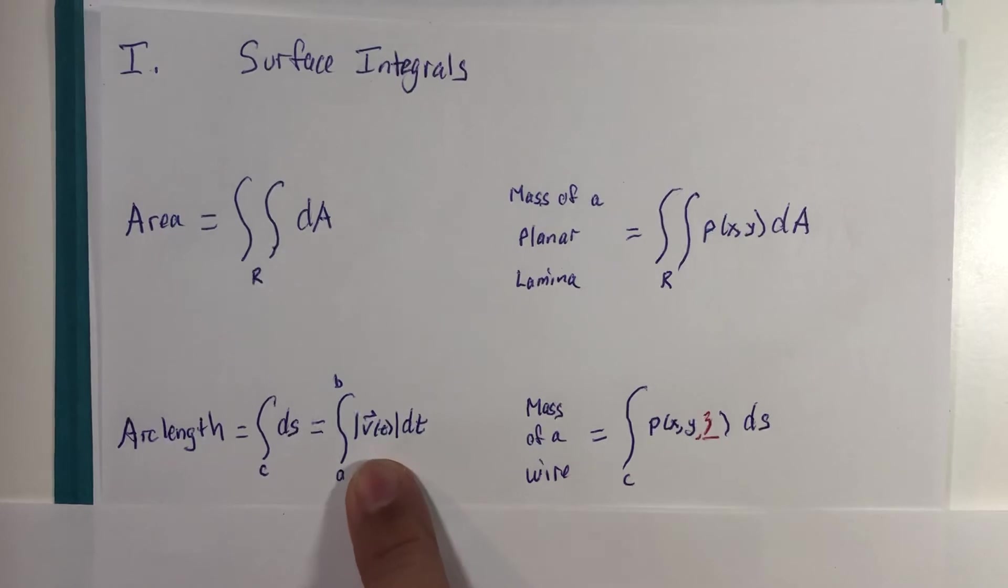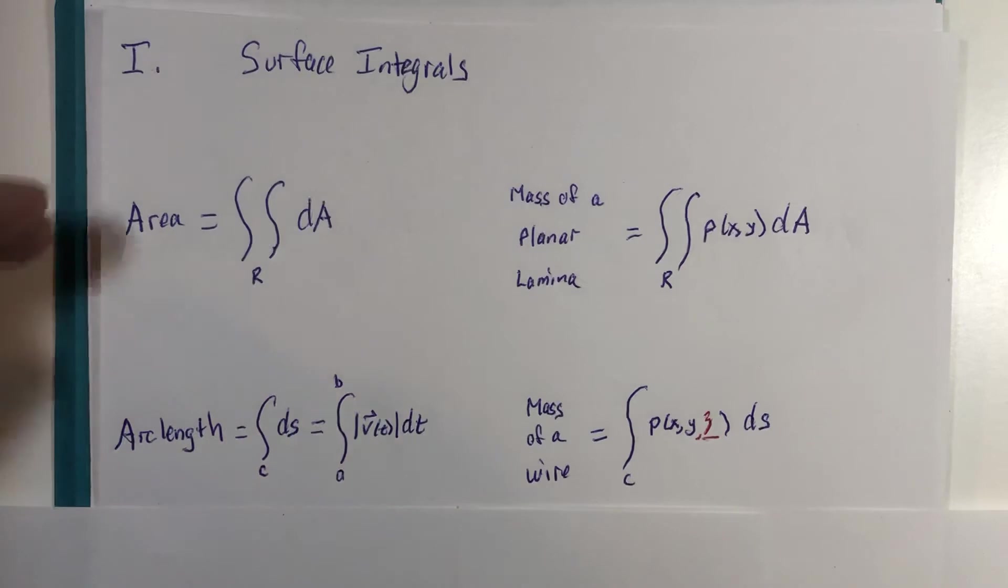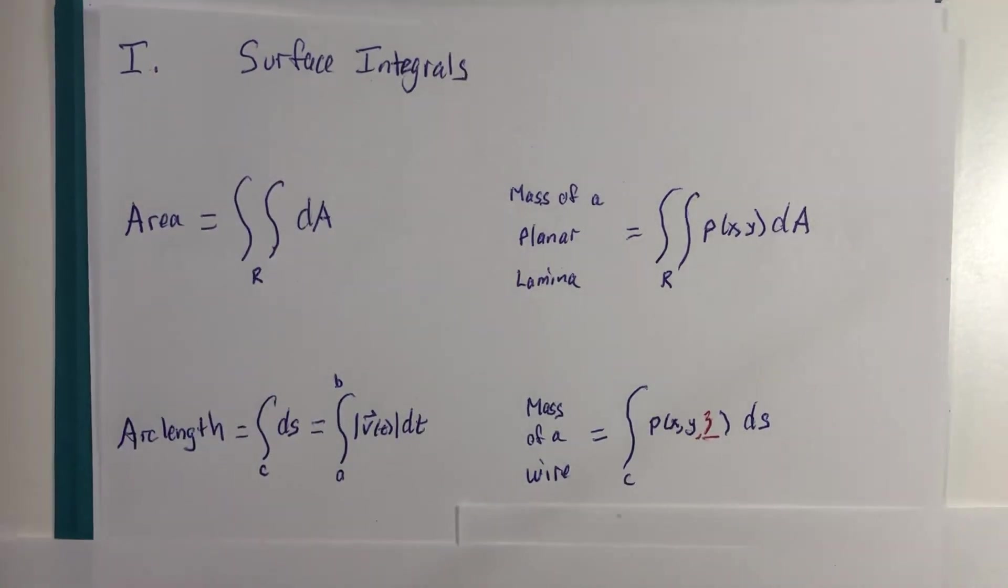The velocity vector is part of this ds expression. So again, just trying to draw some comparisons across a couple of universes here. Let me scroll a little bit.